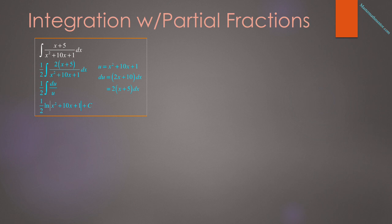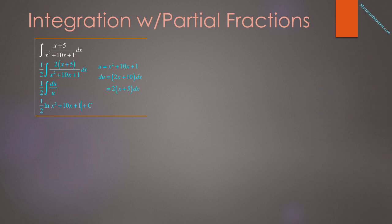Let's review an integration problem from AB Calculus. We want to integrate (x + 5) over (x² + 10x + 1) dx. We did this by u-substitution. We let u equal x² + 10x + 1, and du was equal to 2x + 10 dx, or 2 times the quantity (x + 5). We have an x + 5 in our problem, so we multiply the numerator by 2 and multiply the fraction by one half, giving us one half the integral of du over u. That turns out to be one half the natural log of the absolute value of u, or one half natural log of (x² + 10x + 1) + C.